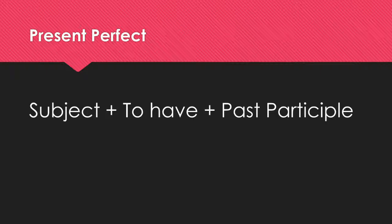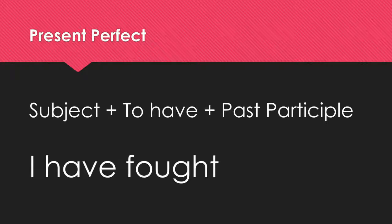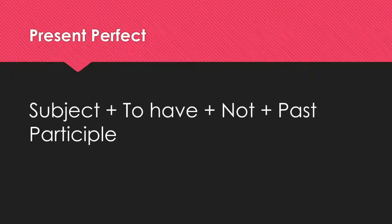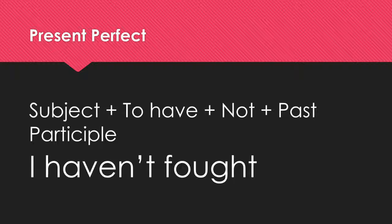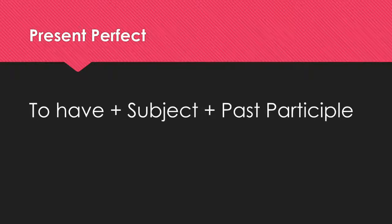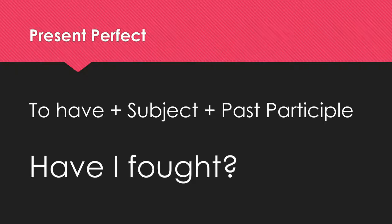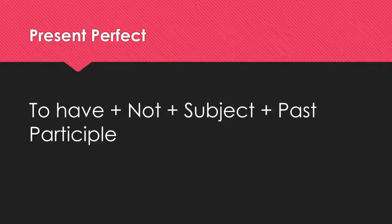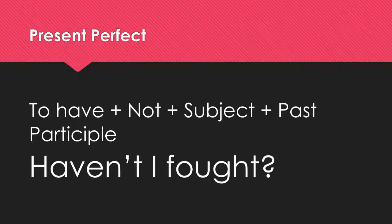The present perfect uses: subject plus 'to have' plus the past participle — for example, 'I have fought.' In the negative, we add 'not': subject plus 'to have' plus 'not' plus past participle — 'I haven't fought.' For questions, the structure changes to: 'to have' plus subject plus past participle — 'Have I fought?' We can also ask negative questions: 'to have' plus 'not' plus subject plus past participle — 'Haven't I fought?'